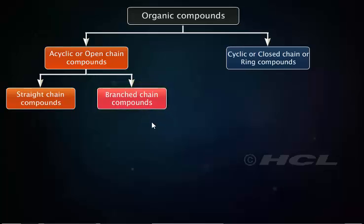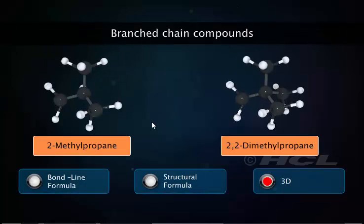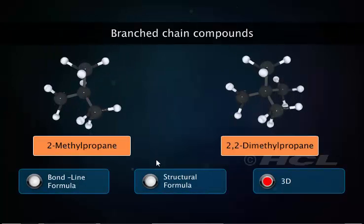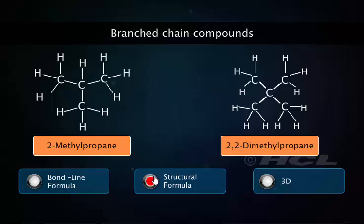Branched chains have at least one carbon holding more than two other carbon atoms. Branching is one of the reasons why there are so many isomers.